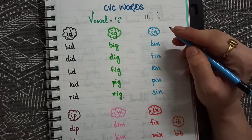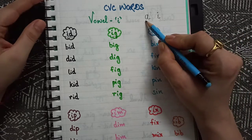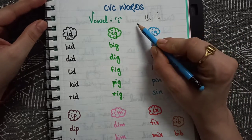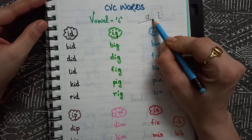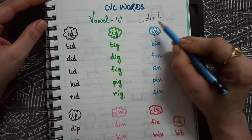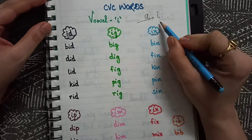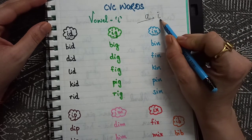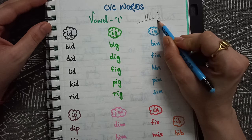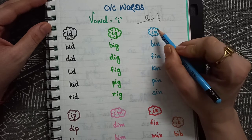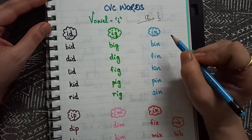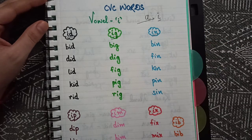Whenever you are telling them about A, you have to stretch it — like 'bad'. And whenever you are doing I, it has to be short — like 'bid', 'did', 'lid'.